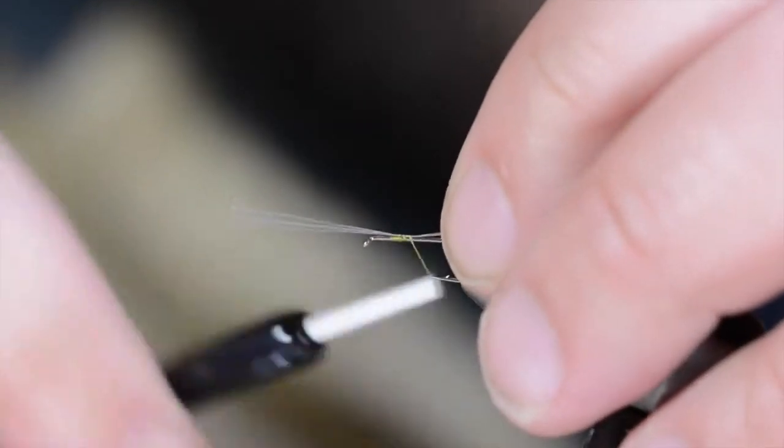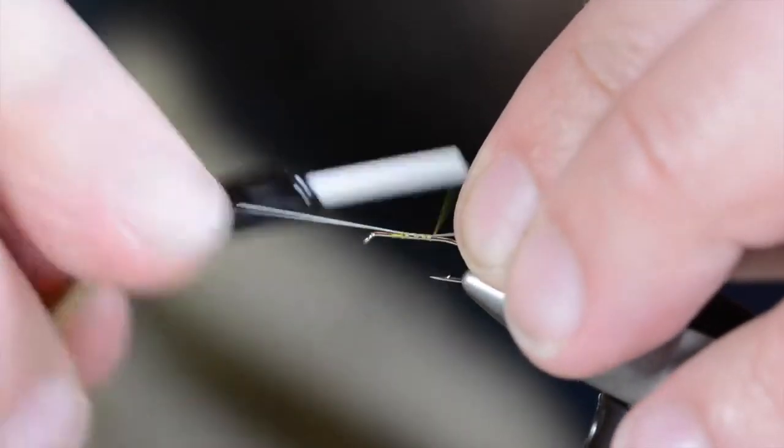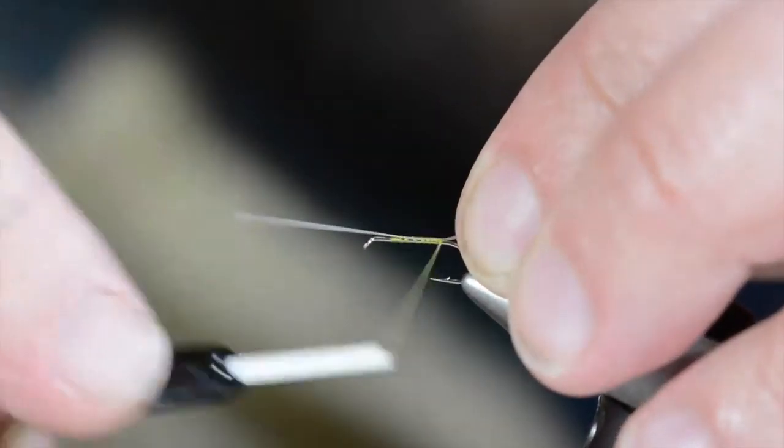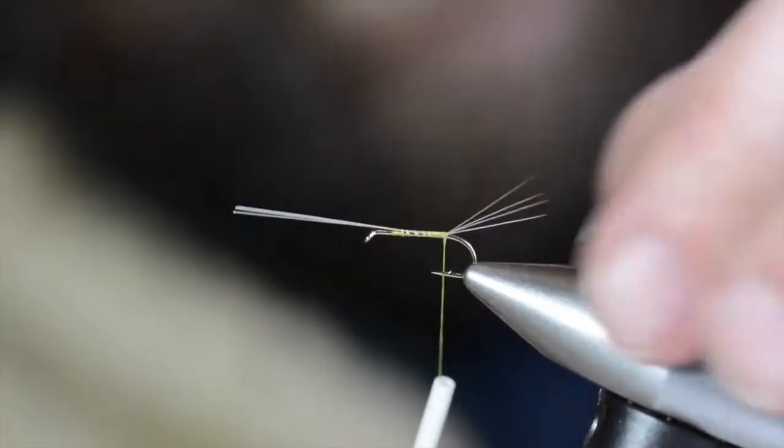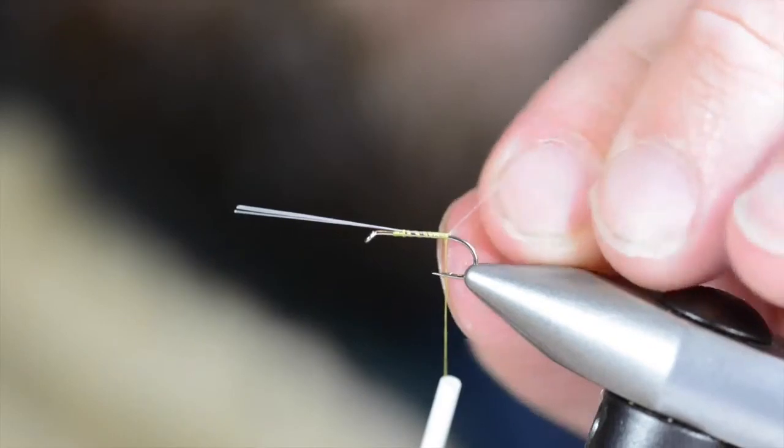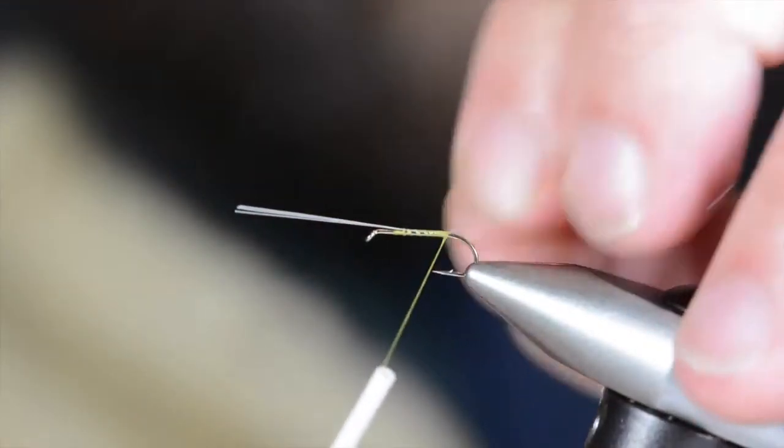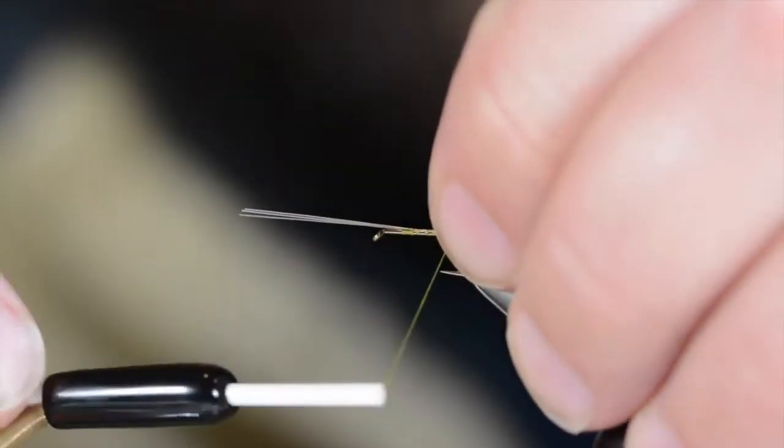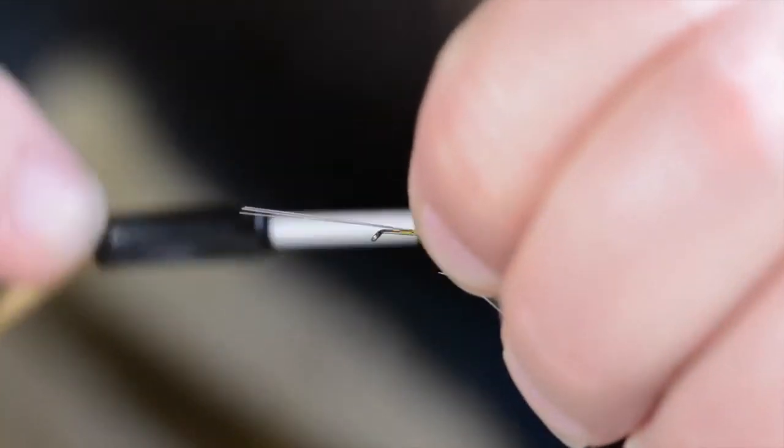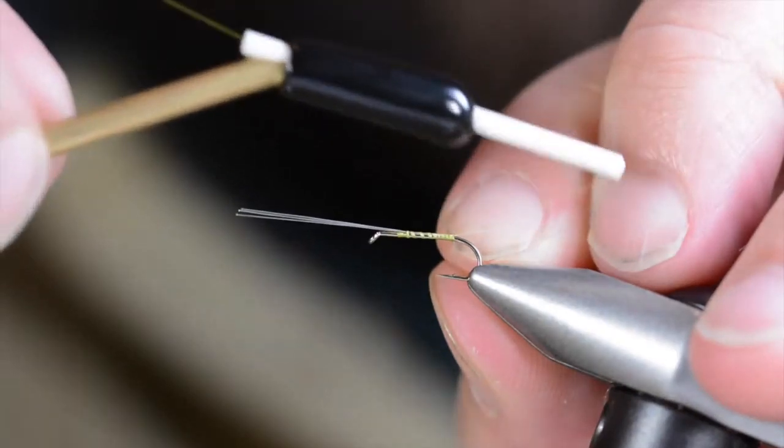Tie those in. I'm going to wrap back, back to the barb. I'm going to split these guys so I have two on each side. I'm going to bring the thread back around, forcing the ones towards me to come out.